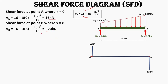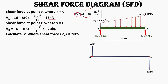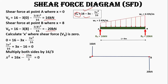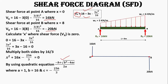We have 16 kN shear force at A and −20 kN at B, so there must be a point where the shear force is zero. Setting Vx = 0 and simplifying gives a quadratic equation. Using the quadratic formula, the value of x is 4.22 meters — this is where the shear force is zero and the bending moment will be maximum.